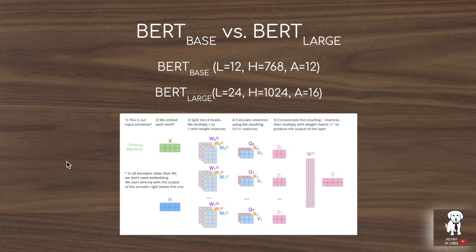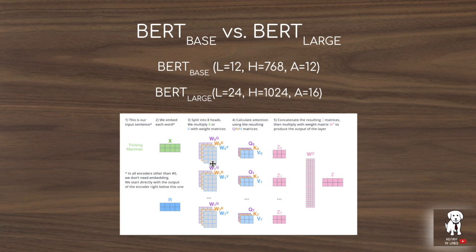Two models are described in the BERT paper: BERT base and BERT large. BERT base has 12 transformer blocks, a hidden dimension of 768, and 12 attention heads, compared to BERT large with 24 blocks, a hidden dimension of 1024, and 16 attention heads. These attention heads describe different parameterizations used to project the input into query, key, and value embedding matrices. Aside from these projections, attention doesn't have extra parameters — it's the dot product of values between the softmax of a normalized dot product between queries and keys.